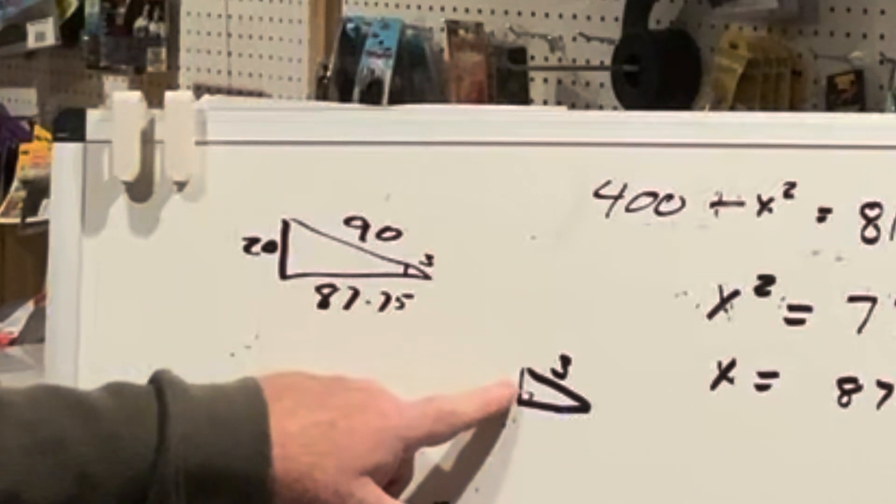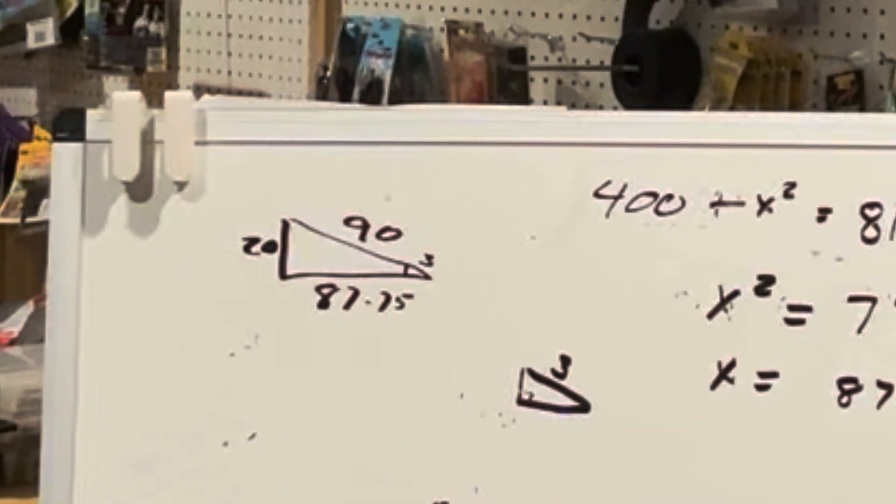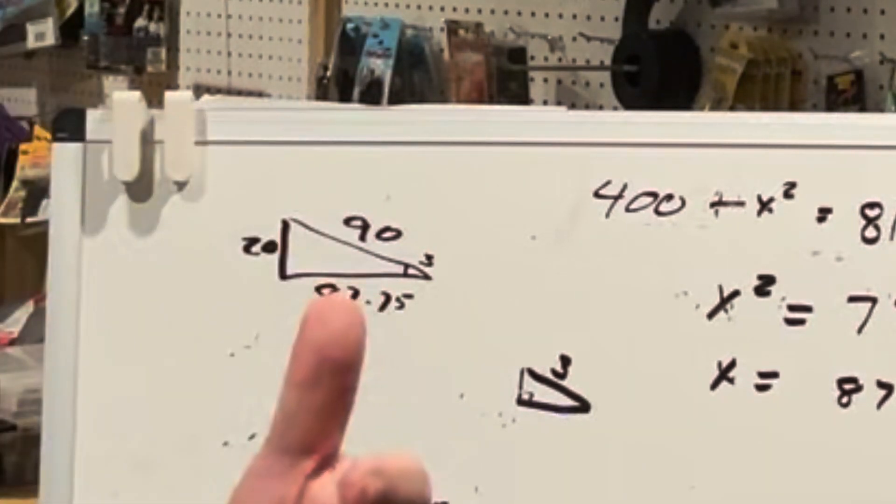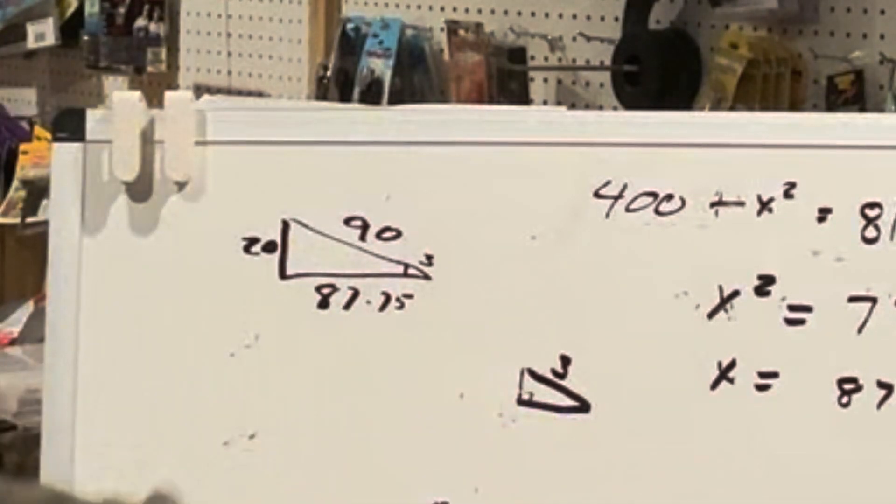...that means that the height of that bait is actually about seven inches. It's about 0.60 feet off the bottom of the lake.